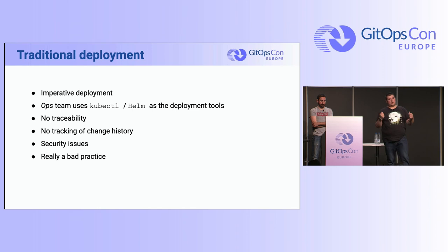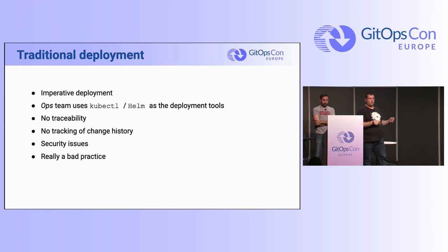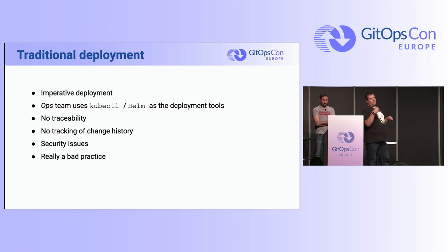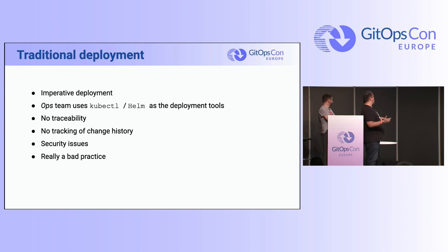We have to keep secrets and transmit them to our CI/CD tool. We have to get connections between the CI runner and the Kubernetes cluster, and so on. So it's quite a bad practice.